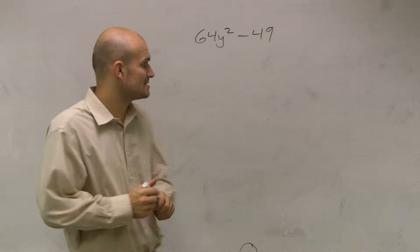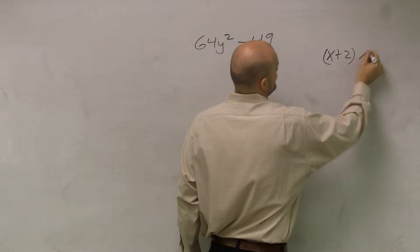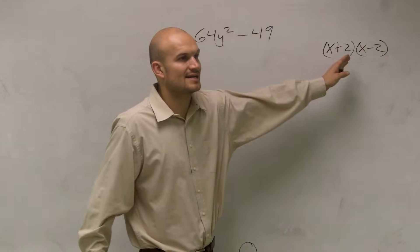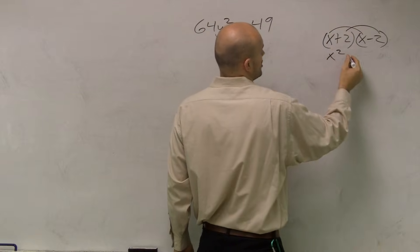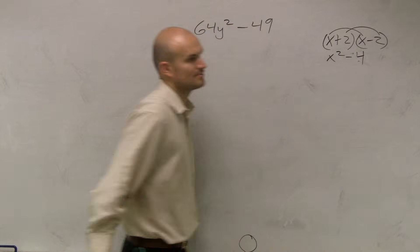Well, the best thing I can relate to this is remembering multiplying x plus 2 times x minus 2. When we do those special factors, we notice that our middle terms always cancel out. So we really just need to multiply the first two terms and the last two terms.